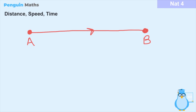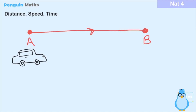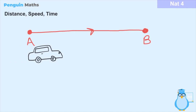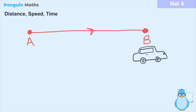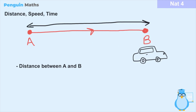So, distance, speed, and time — what are they and how do they relate to one another? Imagine we have a car that starts at point A and travels along to point B. There are three things we can measure from the car's journey. The first would be the distance between point A and point B — in other words, how far the car has traveled — and this may be measured in meters, kilometers, or miles, depending on the scale of the task.